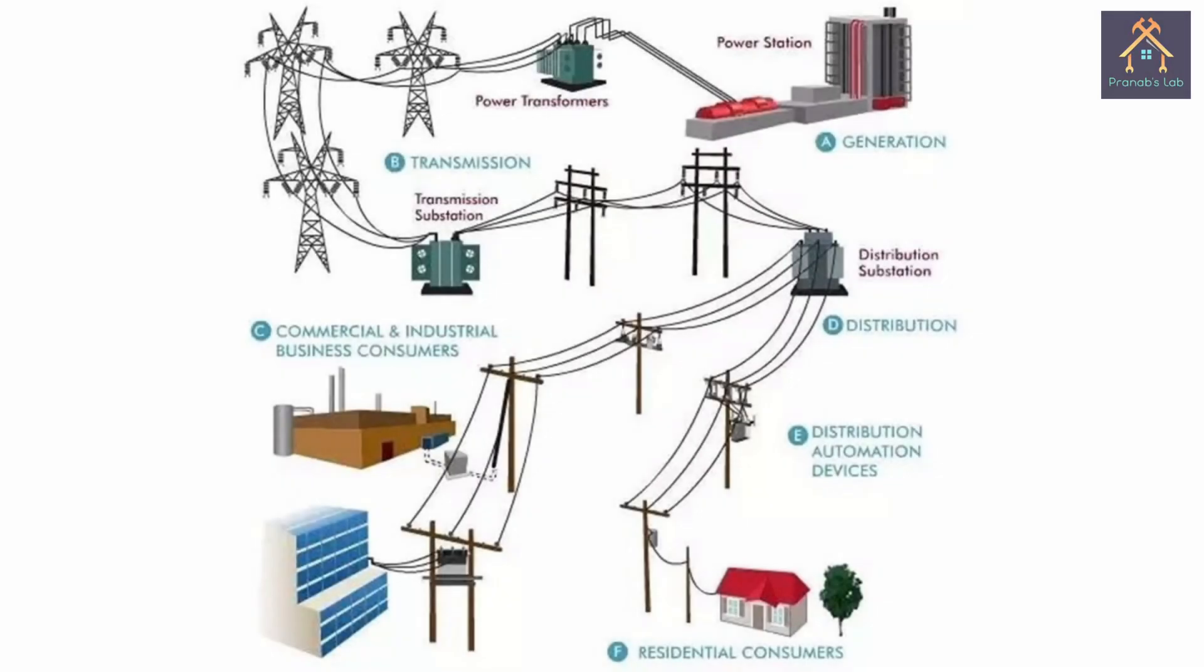In between this journey, the level of voltage is stepped up in power transformer then transmitted to a long distance, then voltage level is stepped down and distributed in some different cities and industries. After one more step down, we get electricity at our house.